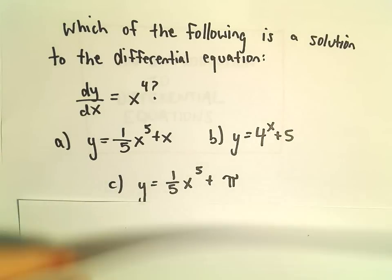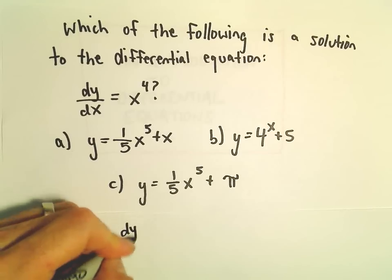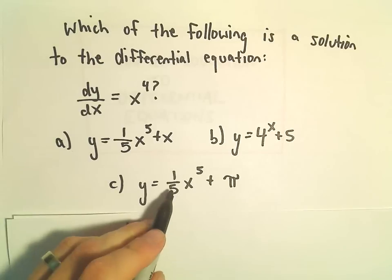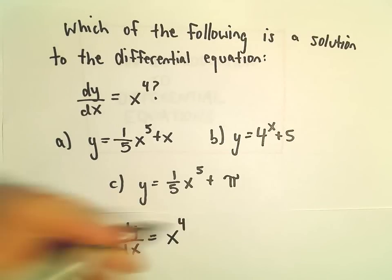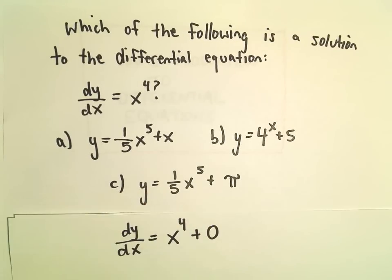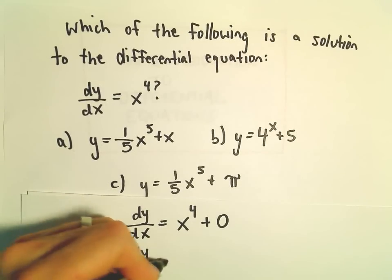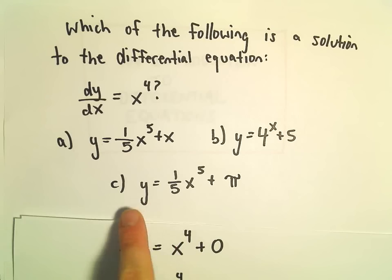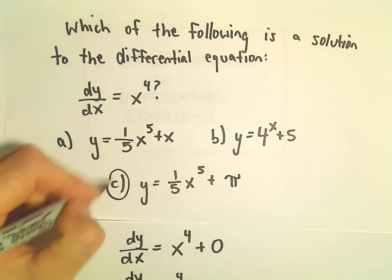Likewise, we can check part c. The derivative of y with respect to x: we'll get 1/5 times 5x to the fourth, which gives us x to the fourth. The derivative of pi is just zero. So we've found our solution — part c is the solution to this differential equation.